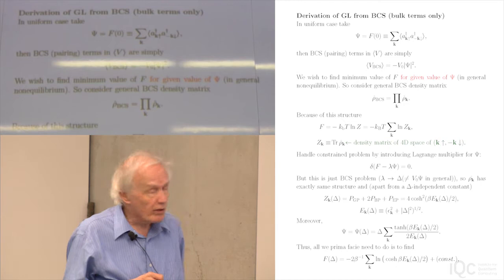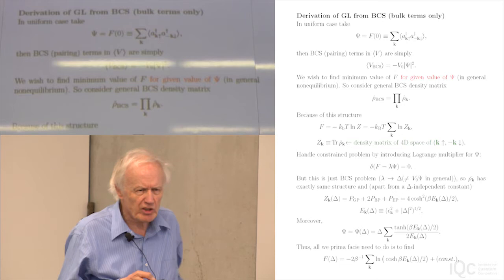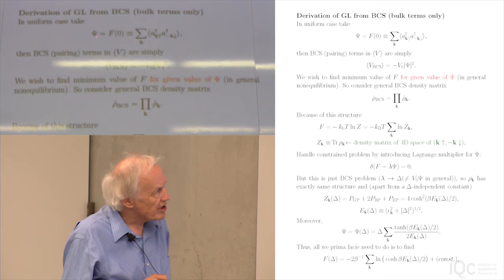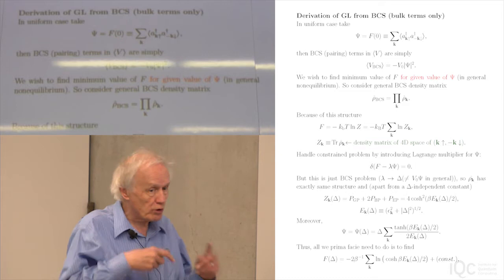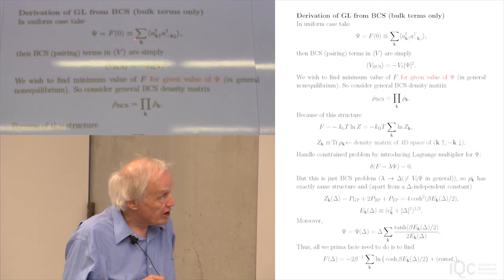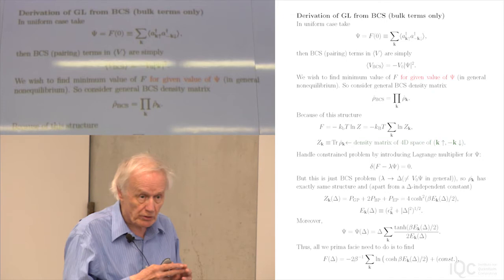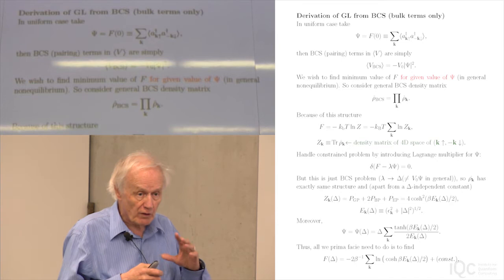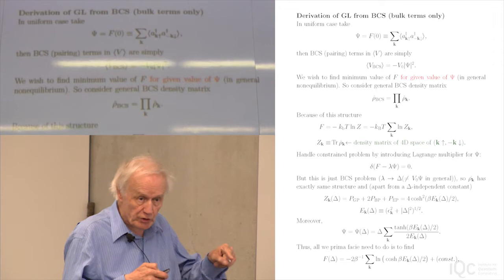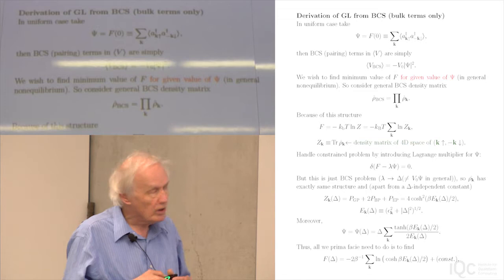There are various possibilities, and the normalization of the order parameter is a matter of convention. The simplest definition is to take the order parameter to be the pair wave function for two opposite spins at the origin. If the situation is spatially uniform, that's given in BCS theory by this expression. In the Anderson pseudospin model, the longitudinal component of spin corresponds to the occupation numbers, while the transverse component corresponds to this quantity — so in the Anderson pseudospin model, this quantity is just the total transverse pseudospin.